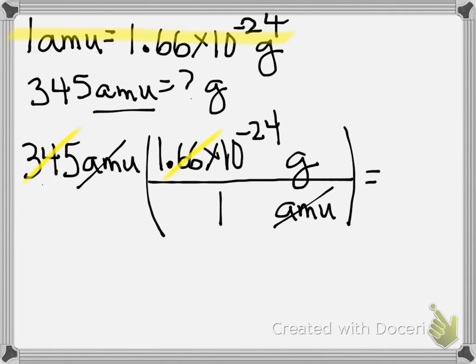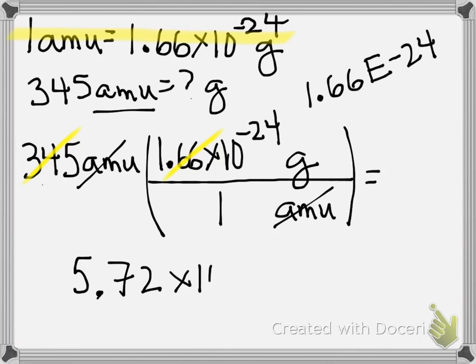When you do that on your calculator — and this is a good one for everyone to do — remember you're going to put 1.66 in as 1.66E negative 24. You should get an answer of 5.72 times 10 to the negative 22nd grams. If you struggle with this on your calculator, find someone in the room who got the right answer and have them help you figure out what you did incorrectly.